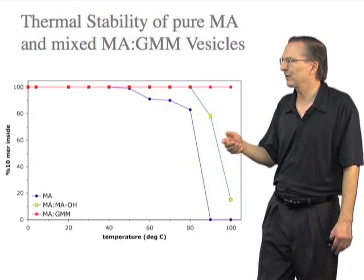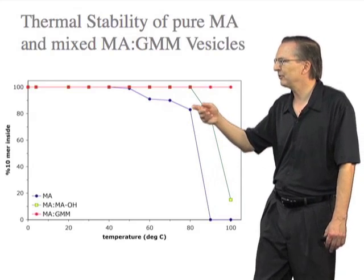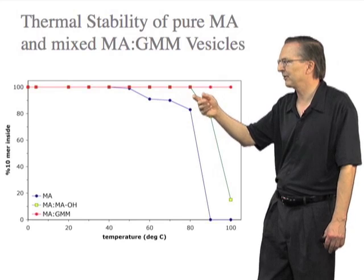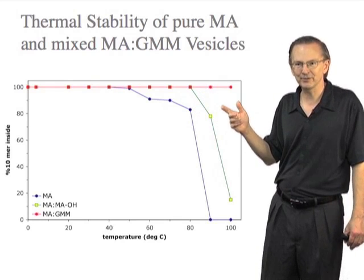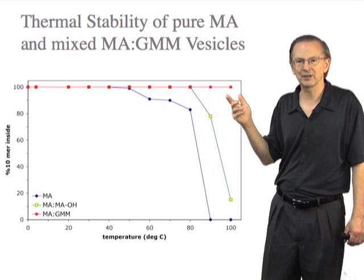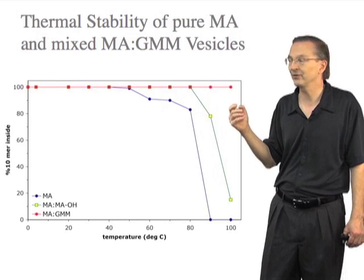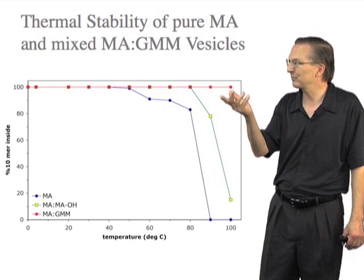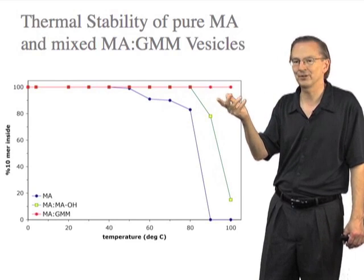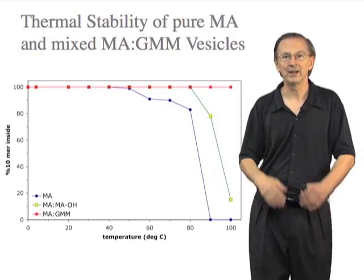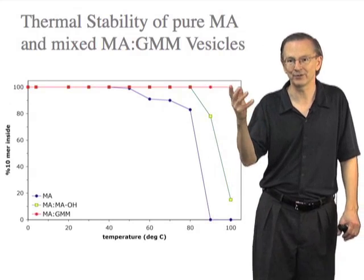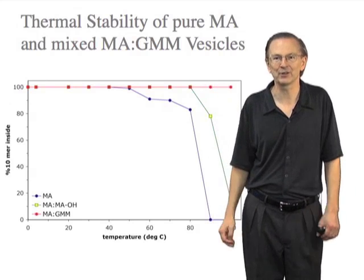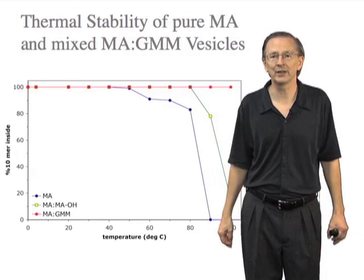If you add some of the corresponding alcohol, you can see significant stabilization. But the most dramatic effect is when you add a fraction of the glycerol ester of that fatty acid — you can essentially boil these vesicles for an hour and none of the contents leak out; at least these oligonucleotide contents are trapped inside.